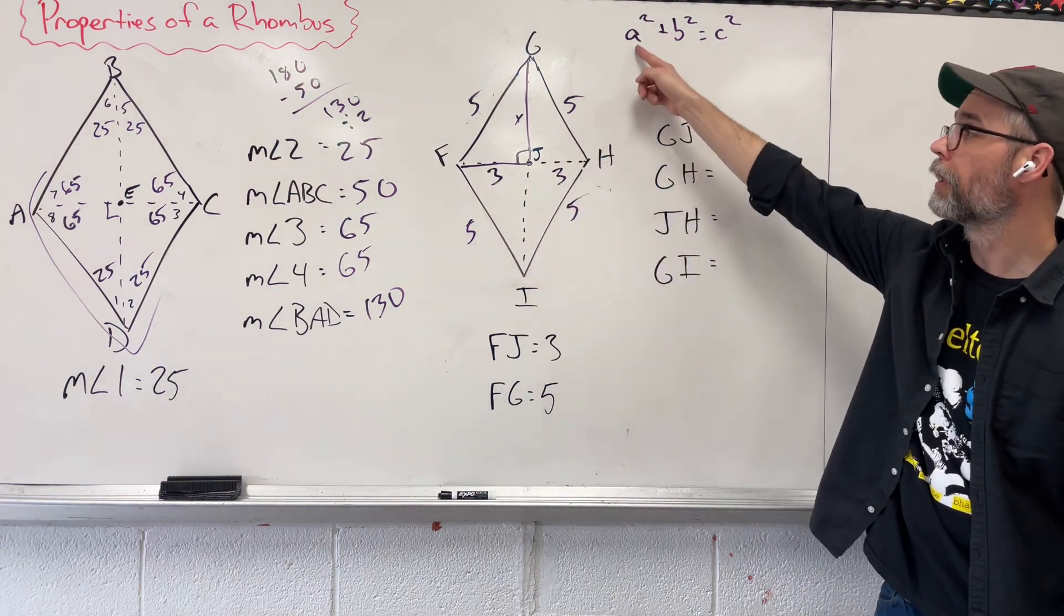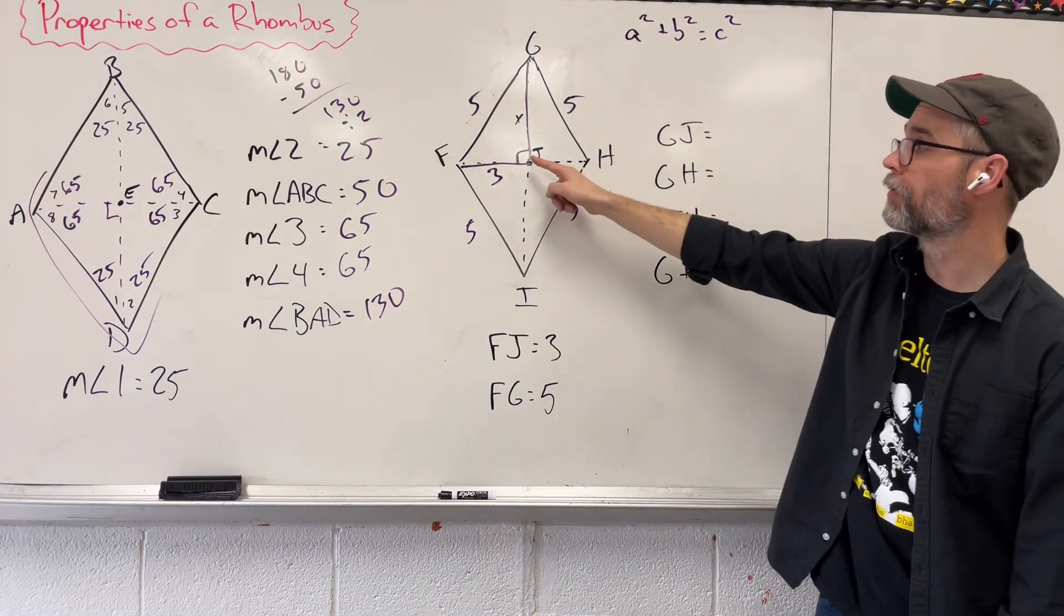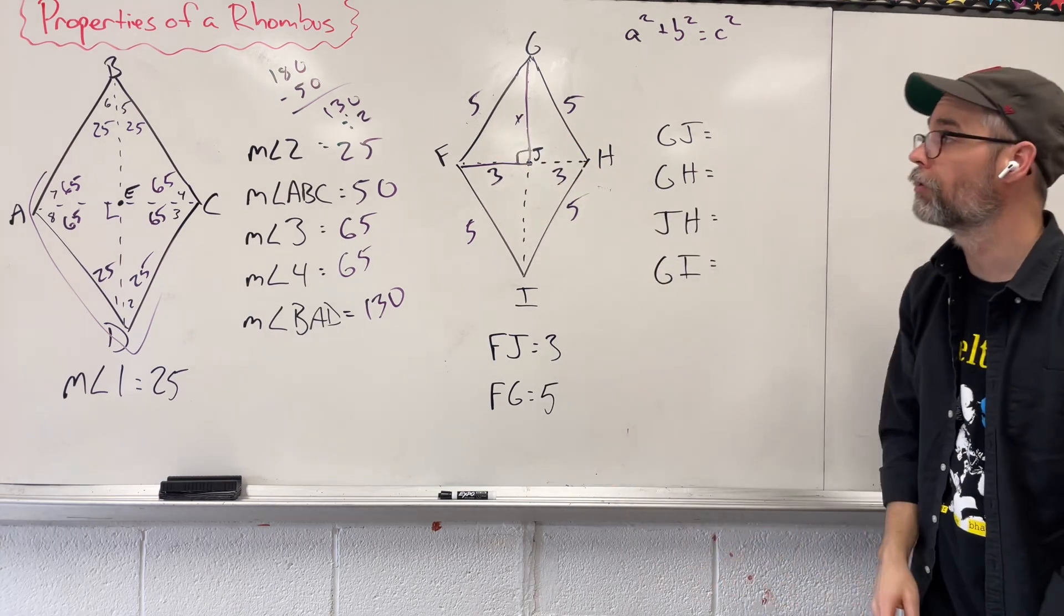We could take 3, plug it in for A. X, plug it in for B. 5, plug it in for C because that's our hypotenuse across from the right angle, largest side.